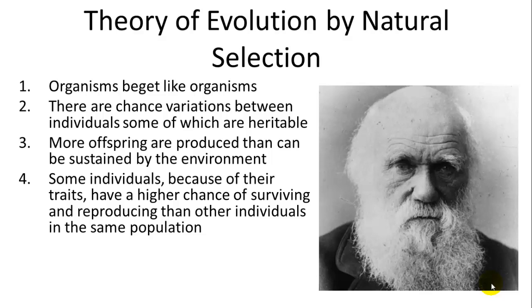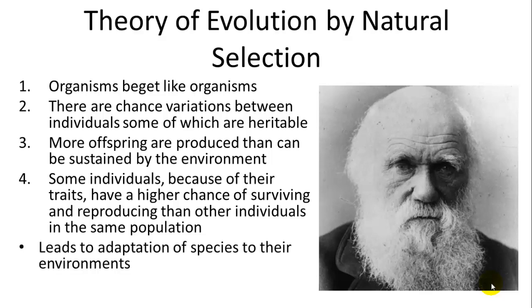The fourth principle: some individuals, because of their traits, have a higher chance of surviving and reproducing than other individuals in the same population. So some are more fit, more able to survive and also reproduce. This leads to adaptation of species to their environments.